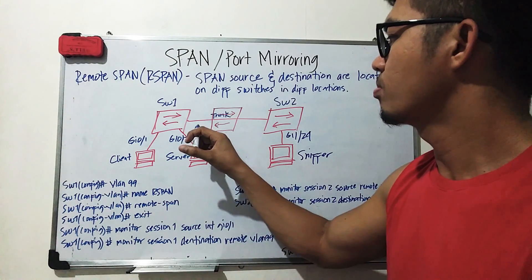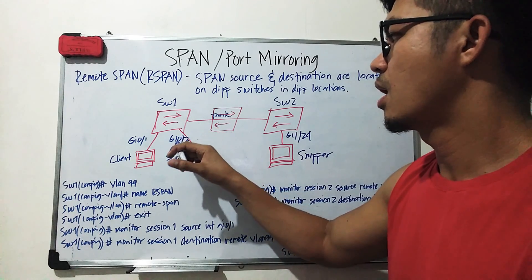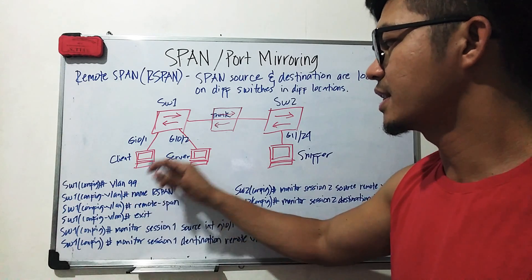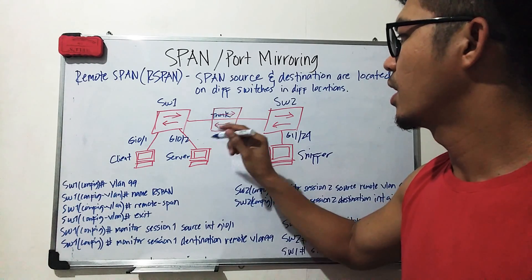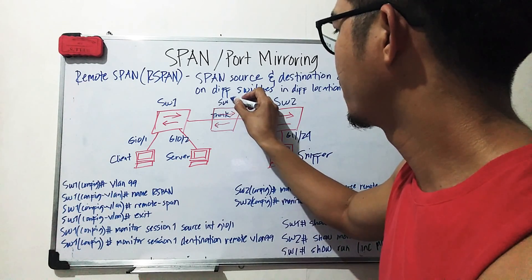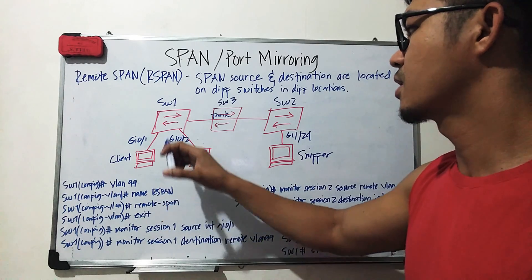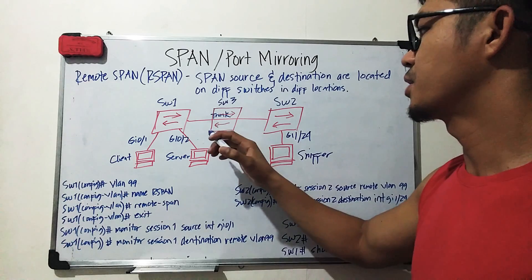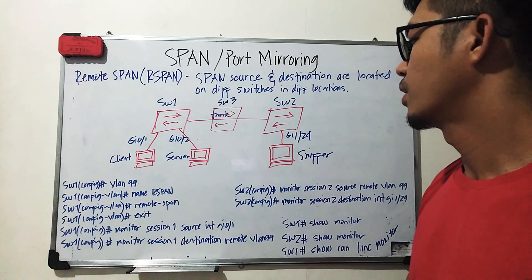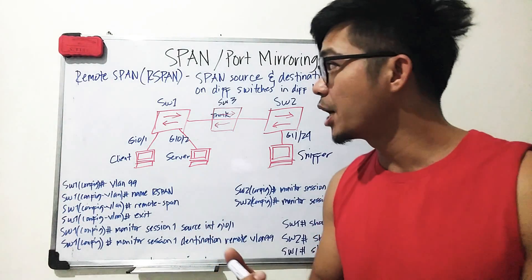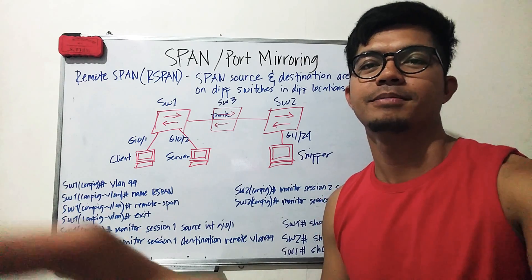Just to emphasize — you need to configure your trunk ports to carry traffic from VLAN 99. You need to configure VLAN 99 on your trunk ports, and also on any transit switch, such as Switch 3. VLAN 99 should exist on Switch 1, Switch 3, and Switch 2, and should be allowed on the trunk ports between these switches. That's it for remote SPAN, or port mirroring. Thanks for watching — see you next time.